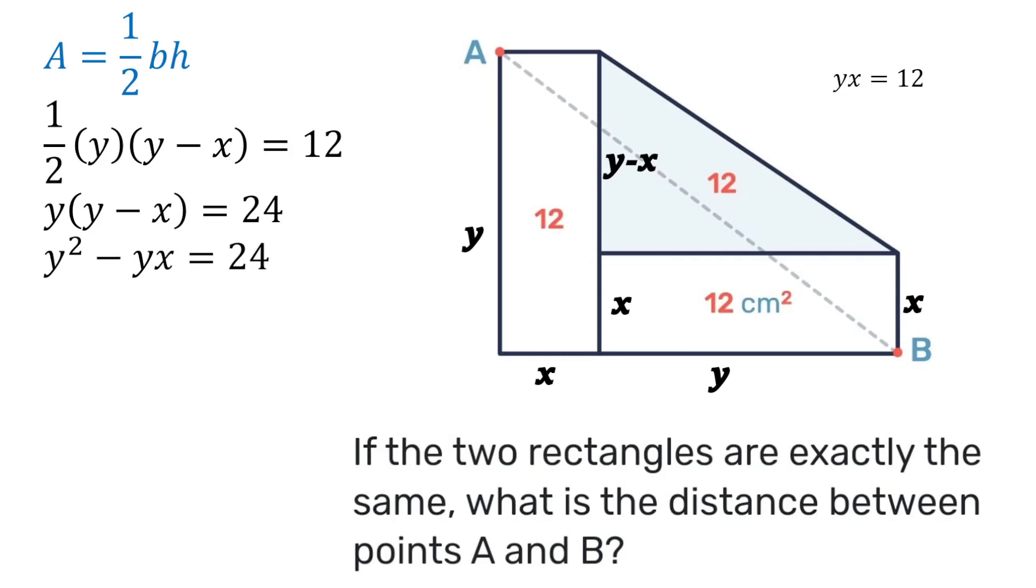However we know that y times x is 12 so I can substitute 12 in place of yx. And then transposing I'll have y squared is equal to 24 plus 12 so that gives me that y squared is 36 which means that y will be the square root of 36 which is six. Let's hold on to that as well.